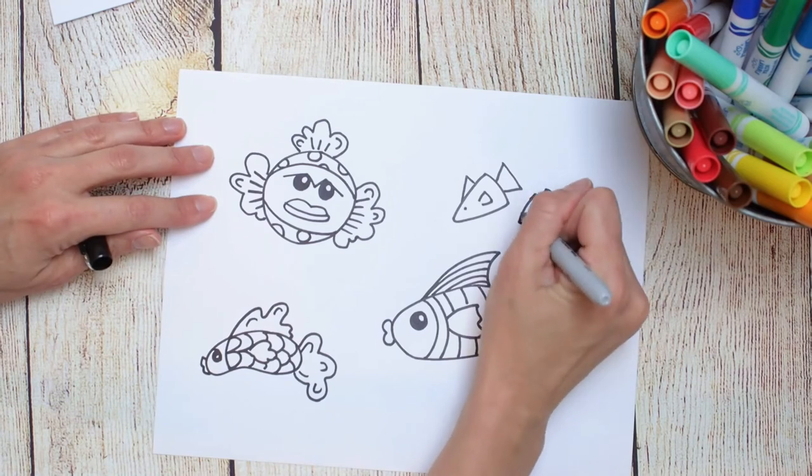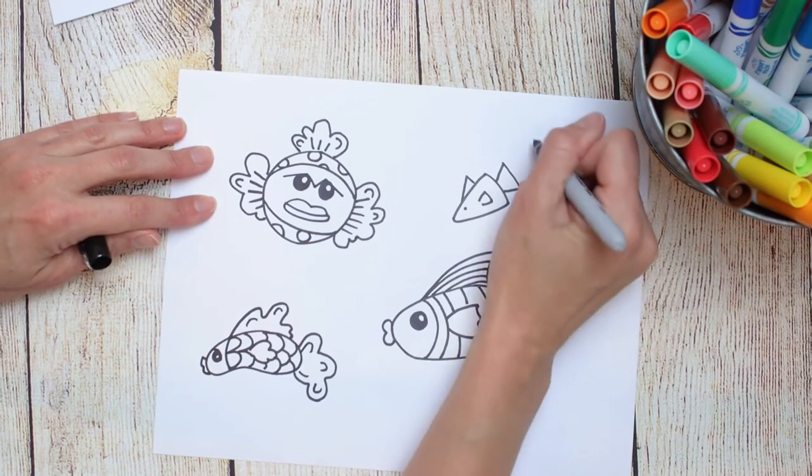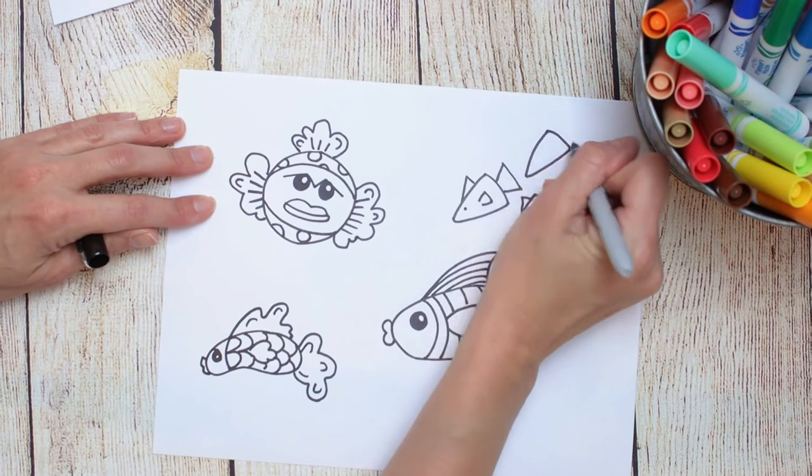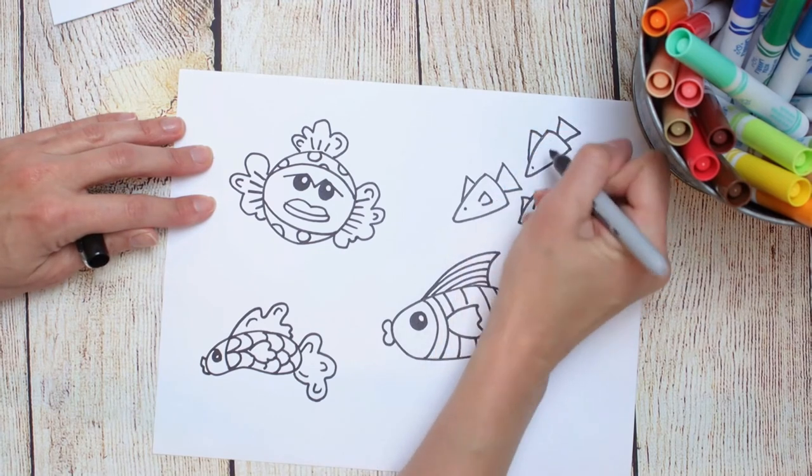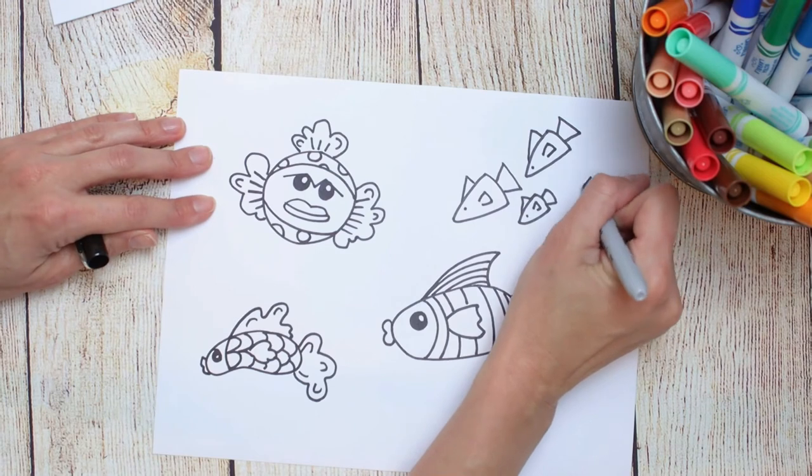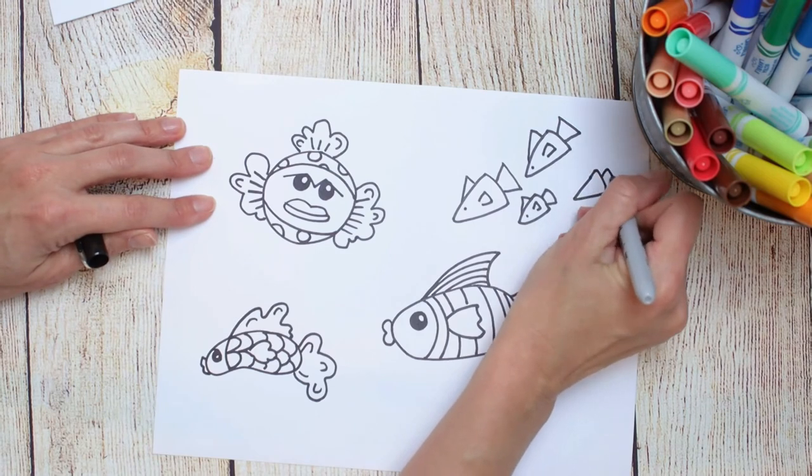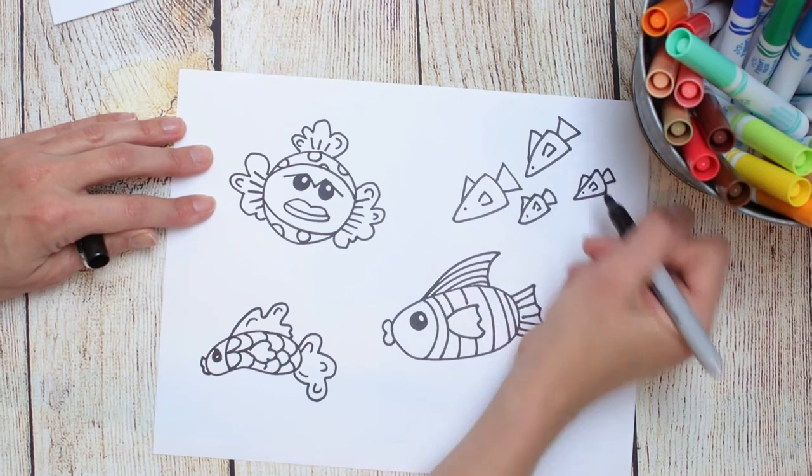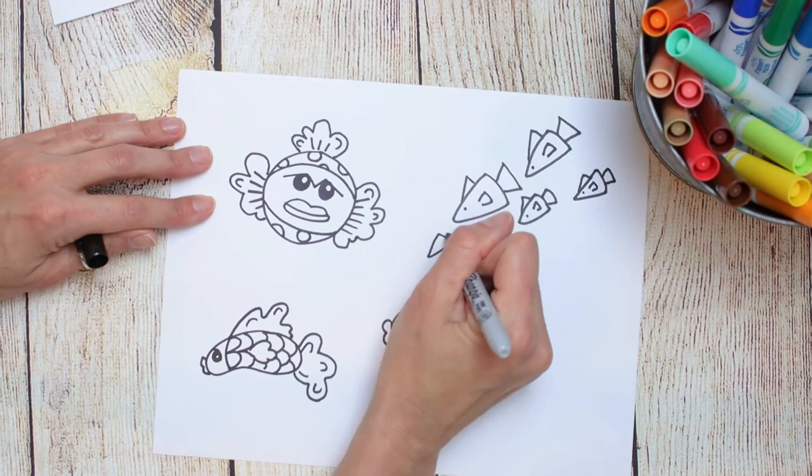And then since fish are often seen in schools, I went ahead and just filled some space with lots of that little fish. He's really simple, really easy to draw over and over. So take a look at your paper and see where your composition might have some big open spots and maybe even repeat a fish or two.